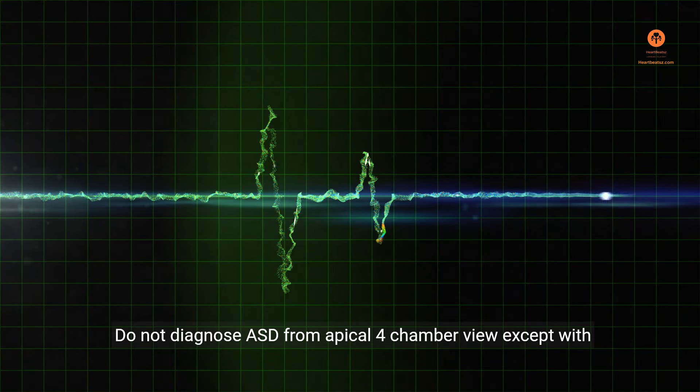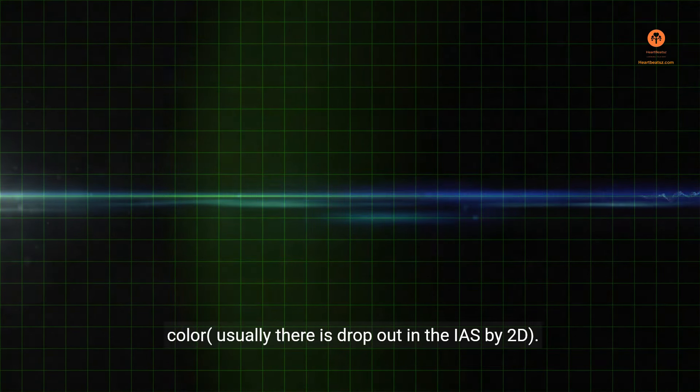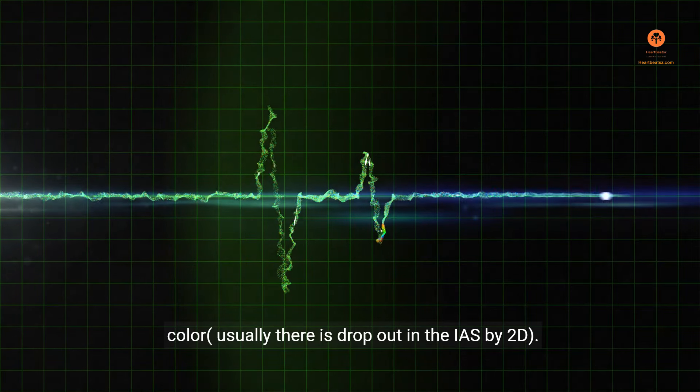Do not diagnose ASD from apical four-chamber view except with color. Usually, there is dropout in the IAS by 2D.